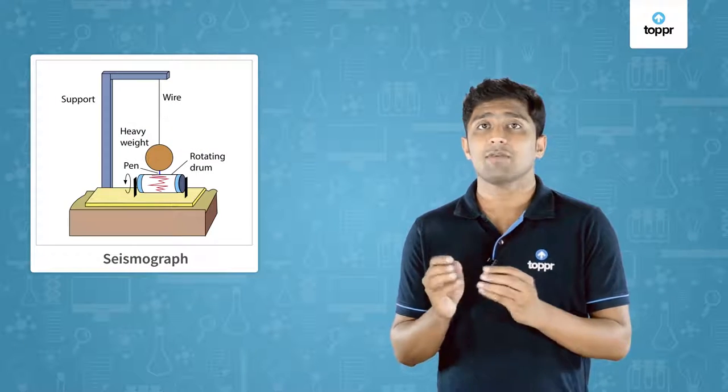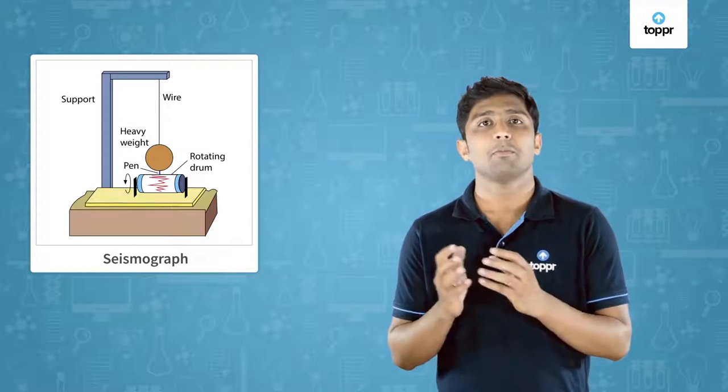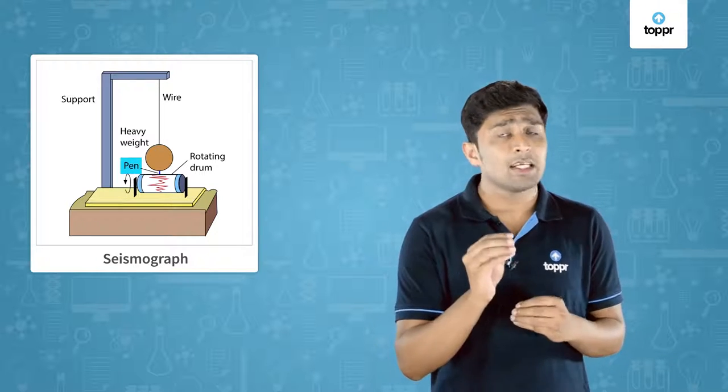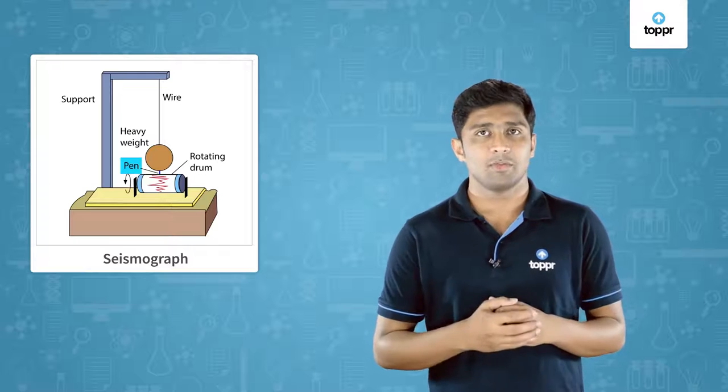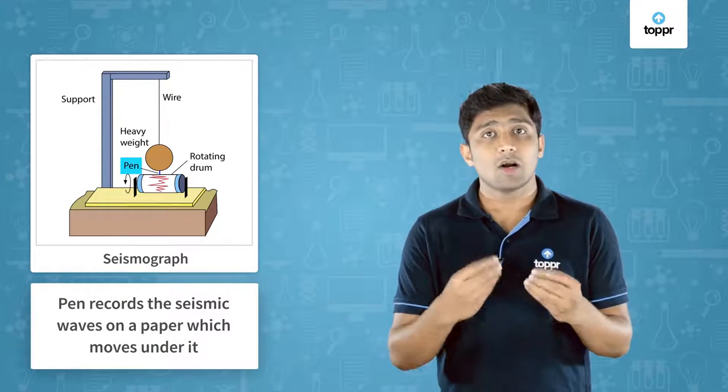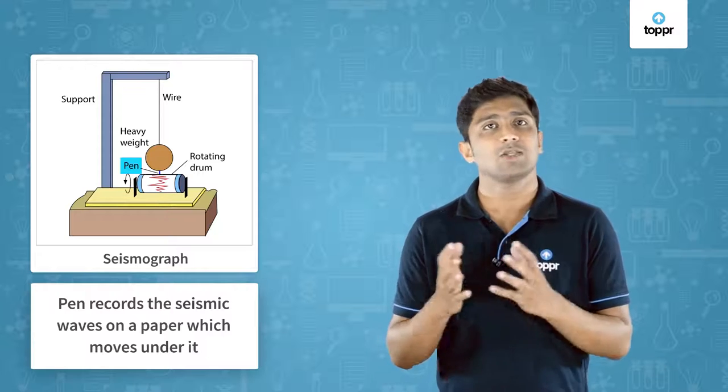A seismograph consists of a vibrating rod or a pendulum which starts vibrating when shaking occurs. A pen is attached with the vibrating rod. The pen which is attached with the vibrating rod starts recording the seismic waves when shaking occurs.